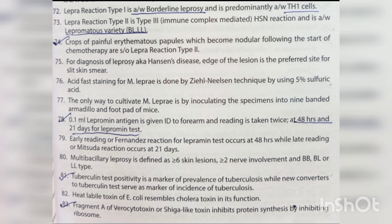Acid-fast staining for M. leprae is done by Ziehl-Neelsen technique using 5% sulfuric acid. The only way to cultivate M. leprae is by inoculating specimens into nine-banded armadillo or the footpad of mice. 0.1 mL lepromin antigen is given intradermally to the forearm, with readings at 48 hours (Fernandez reaction) and 21 days (Mitsuda reaction). Multibacillary leprosy is defined as ≥6 lesions, ≥2 nerve involvement, and BB, BL, or LL type.